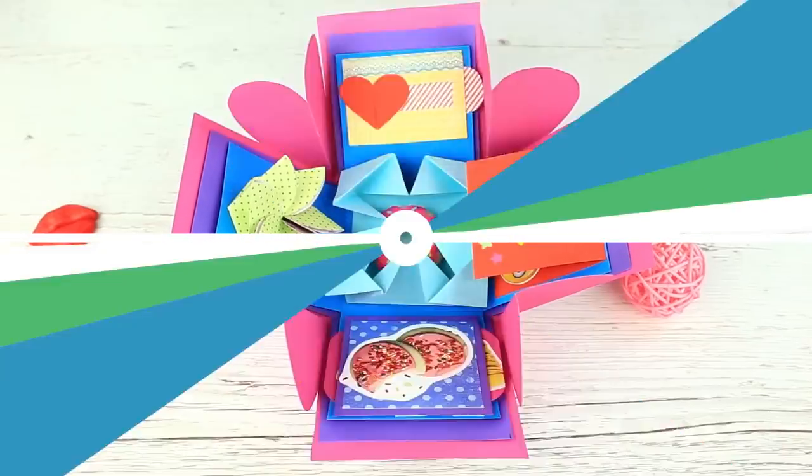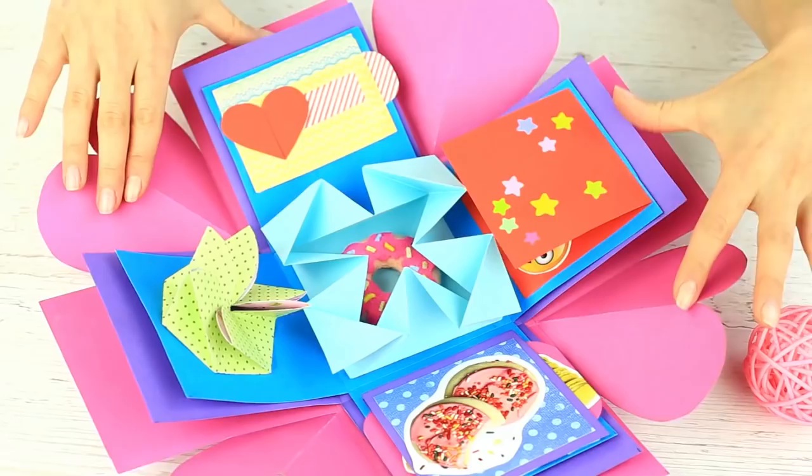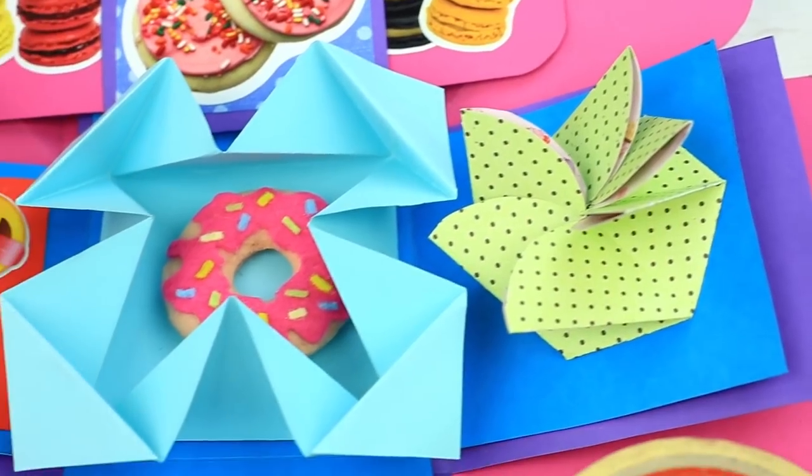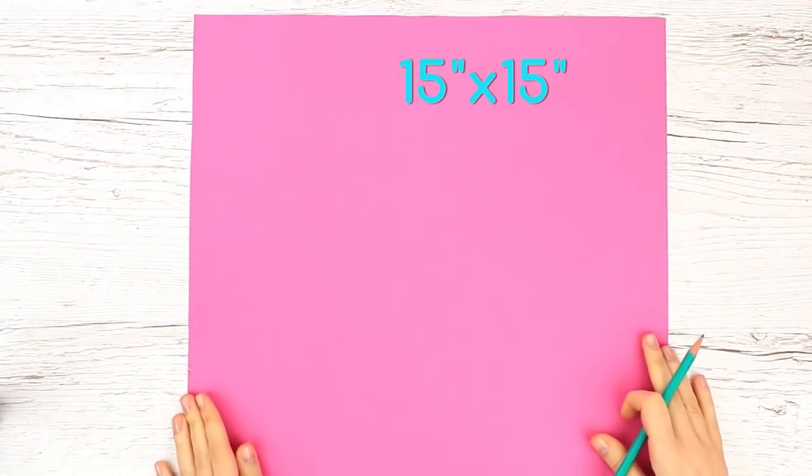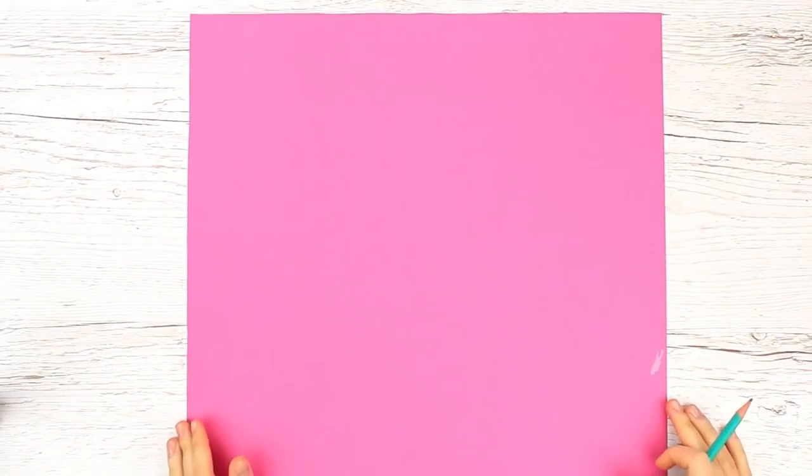You can put a pretty little gift into the exploding box. It could be beauty products, jewelries, or something very special. Take colored cardboard 15 inches by 15 inches. The size of the box depends on the cardboard dimensions.